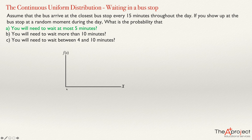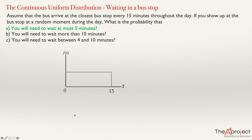We need to wait between zero minutes — because that's the moment when you arrive and the bus happens to be there, so you don't wait at all — up to 15 minutes, which is the maximum wait. That happens when you arrive at the bus stop just as the bus is leaving. So you can wait between zero and 15 minutes. Since this is a continuous uniform distribution, the density function is a horizontal line. This rectangle has 100% of the probability, so with a base of 15 minutes, the height must be 1 over 15.